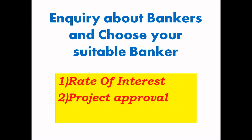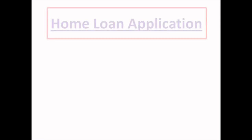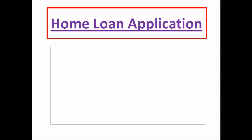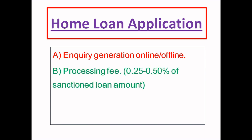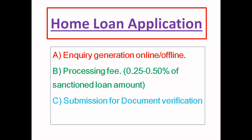So, the processing fee is important because it is very negotiable and can vary. Some bankers waive the processing fee. If you want to know which bankers to choose, you should start the home loan application process by generating an online or offline inquiry. Normally, the loan processing fee is 0.25% of the loan amount. You need to negotiate with your bankers to successfully process your loan.